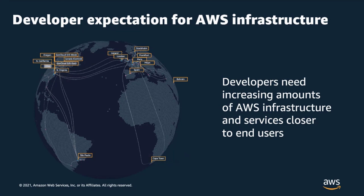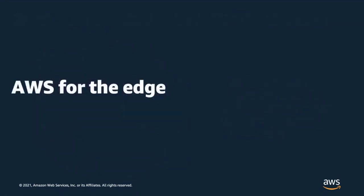These latency-sensitive workloads have traditionally required customers to procure, operate, and maintain IT infrastructure either in their own data center or co-location facility, which typically adds to cost and operational complexity. Customers also told us they had to run and build these low-latency application components with a different set of APIs and tools. That's why, based on your feedback, we launched different AWS Edge offerings, including AWS Outposts, AWS Local Zones, and AWS Wavelength.